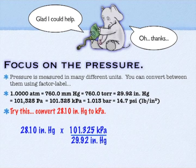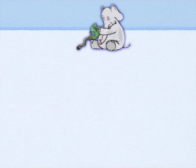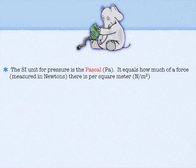29.92 inches of mercury is the same thing as 101.325 kilopascals. Should you memorize those? It's up to you — the more you memorize, the more content you have handy and the easier this stuff will be. You can convert to get 95.1 kilopascals. Think of sea level as about 100 kilopascals or one bar and work up from there. The official SI unit for pressure is the Pascal, which is a Newton per square meter.